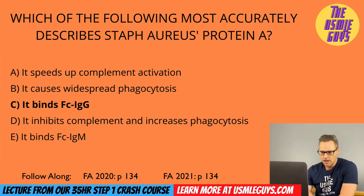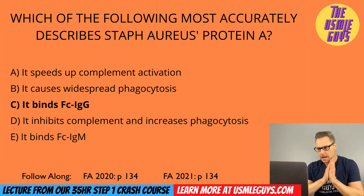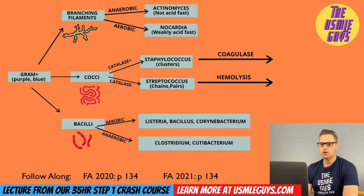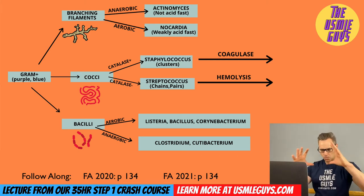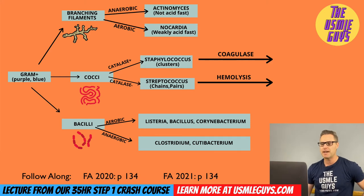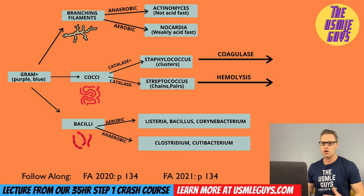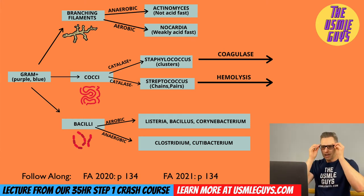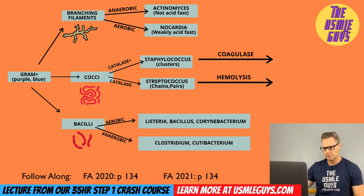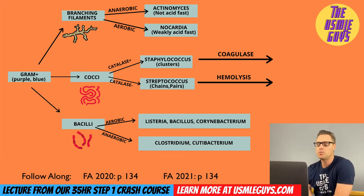The correct answer here is C. Before we talk about Staph aureus, I want to show you the algorithm chart you absolutely must know before your Step 1 exam. You can find this chart in your First Aid. Please make sure you know everything on these algorithms for both gram-positive and gram-negative bugs, as well as for viruses. This is the highest yield of the high-yield stuff. It's easier to think in flowchart terms than to try and memorize a bunch of random things.